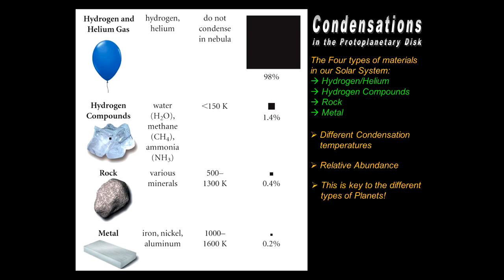And then, last but not least, of course, what about the hydrogen and helium? Well, it doesn't condense at all. In other words, it stays as hydrogen and helium gas. So no matter how close to the sun it is or how far away it is, it's still in gaseous form. So that is extremely key to understanding how the different planets form and where they form.